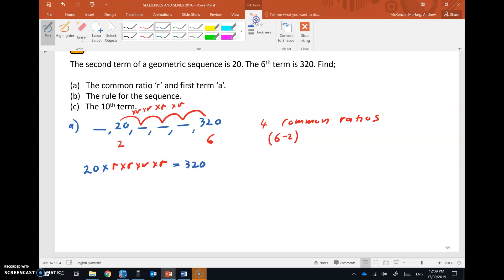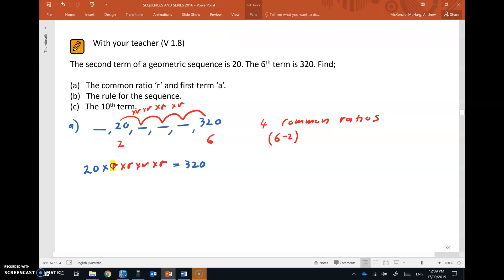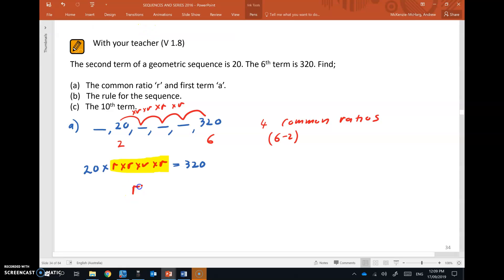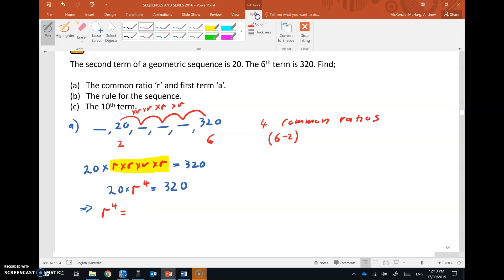Now we can simplify this part here. R times itself 4 times is R to the power of 4. So 20 times R to the power of 4 will give 320. So now we need to solve for R. So we'll take that 20 over the other side and it will divide. So R to the power of 4 equals 320 divided by 20.